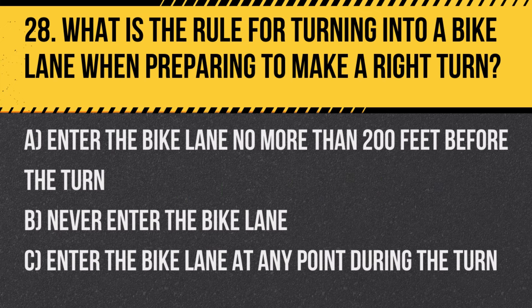Question 28: What is the rule for turning into a bike lane when preparing to make a right turn? A. Enter the bike lane no more than 200 feet before the turn. B. Never enter the bike lane. C. Enter the bike lane at any point during the turn. Answer: A. Enter the bike lane no more than 200 feet before the turn. This action should be done carefully to avoid conflicts with cyclists.